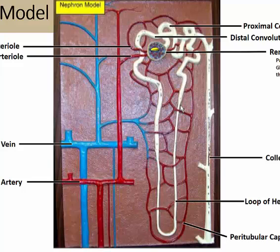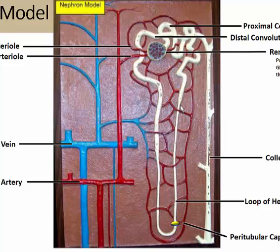Once it leaves the renal corpuscle, it enters into the proximal convoluted tubule. As it descends downward, this area is called the loop of Henle. You can see it ascending back up through the loop of Henle.